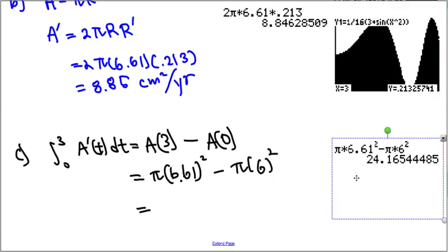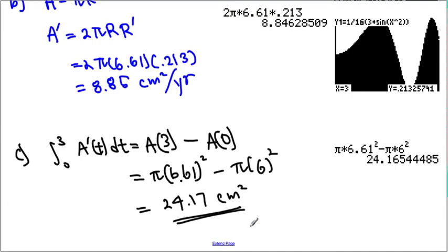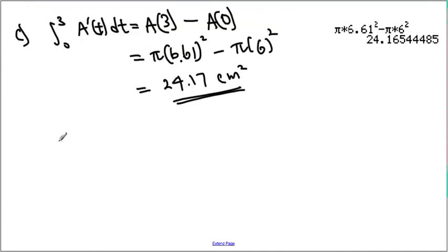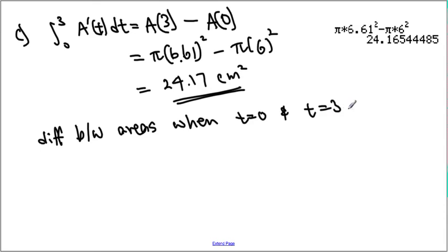Then, we get this value here, 21.17, or 24.17 centimeter squared. The meaning behind this one is this is the difference between areas when t equals 0 and t equals 3.